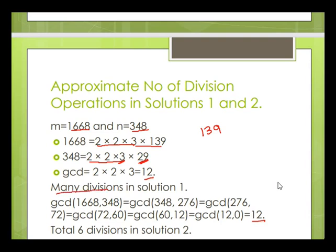If we solve the same problem using Euclid's algorithm, we can do it with just six divisions. Starting with 1668 mod 348 = 276, then 348 mod 276, then after one more division we get a further reduced pair, and after one more division we reach the state where n = 0, and we return m = 12.